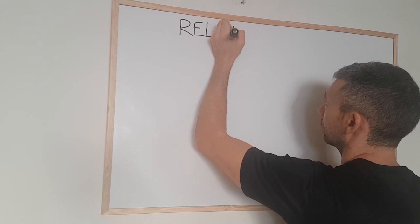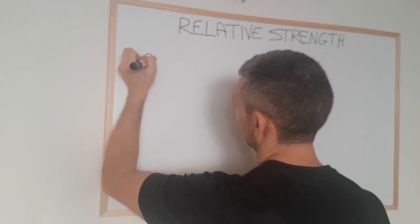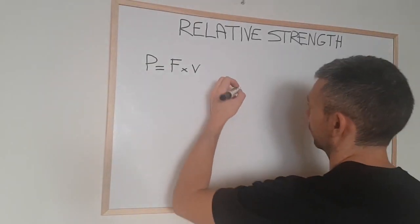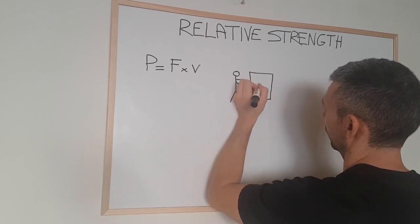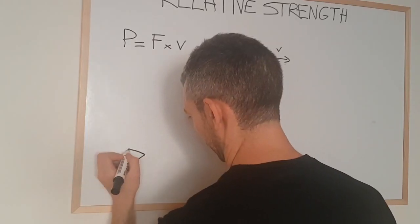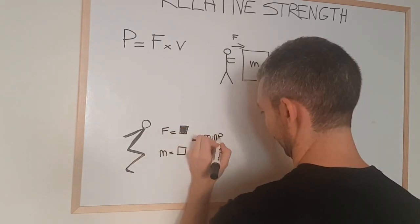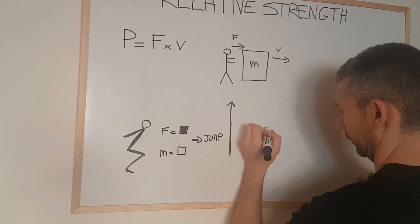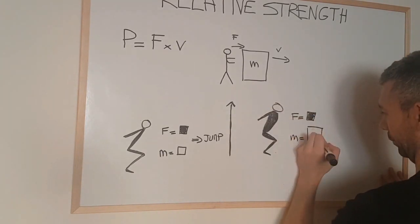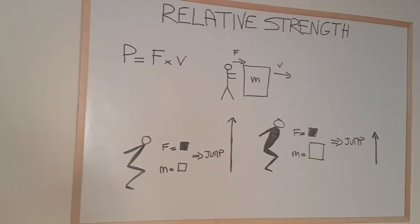Looking again at the formula P = F × V, the first part of the equation relates to force. Force is determined by the ability to move an object that has a mass. In the human body this ability is called strength. Because the object we're moving is our own body, the ability to move efficiently depends on one's strength compared to one's body mass. The stronger I am compared to my own mass, the more easily I'll move in space. This concept is called relative strength. So one determining factor in the vertical jump is the amount of force relative to your body weight that you're able to put into the ground.